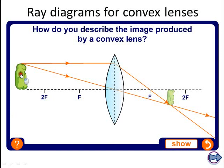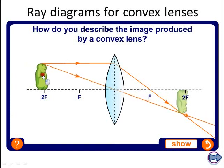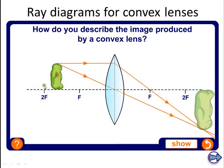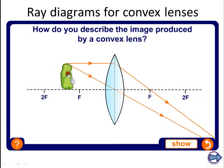If I move now this chap here towards the lens you'll notice that as we go past this distance here at twice the focal length, even though we've drawn the diagram exactly the same we've now got an image which is magnified. It's still inverted, it's still real, but it's now a magnified image.